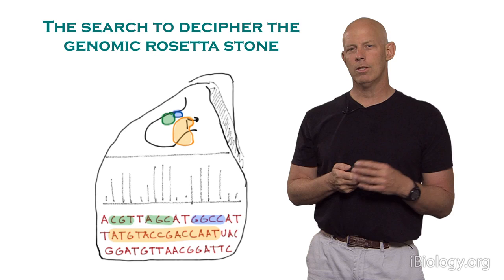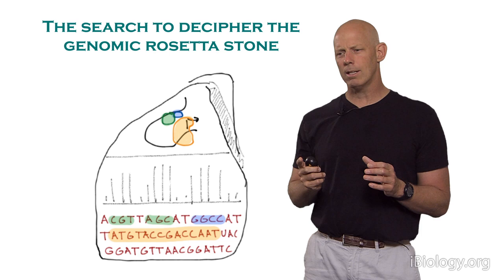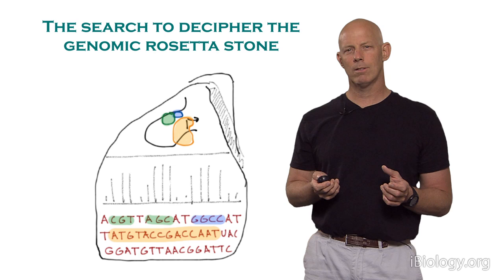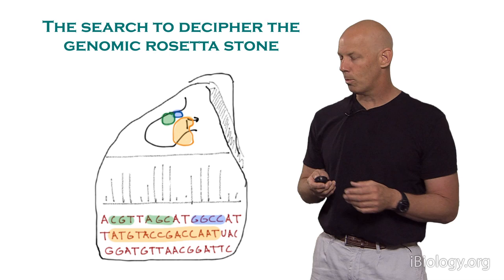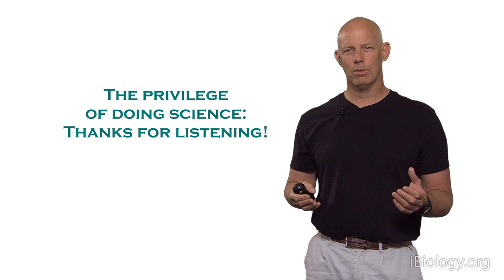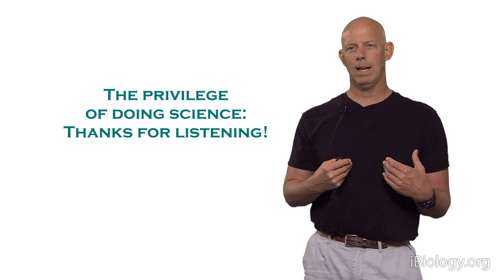In summary, I think the great question of our time is the search to decipher these genomic Rosetta Stones. We've already learned a lot, but as Thomas Paine once said, a long habit of thinking a thing wrong gives it a superficial appearance of being right. A long habit of thinking that we understand genomes and have cracked the code gives it a superficial appearance of having been solved — but I think really it hasn't. That's one of the great questions. It's a subjective matter, this issue of what are great questions, but that's the privilege of doing science: we get to ask questions that interest us and go pursue them. Thanks for listening.